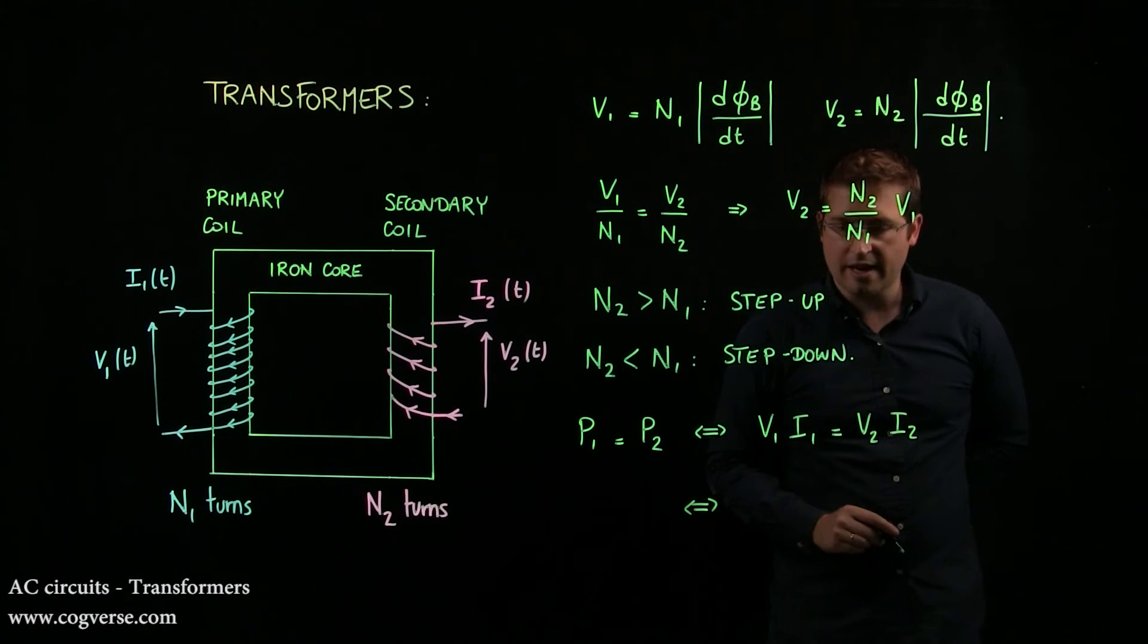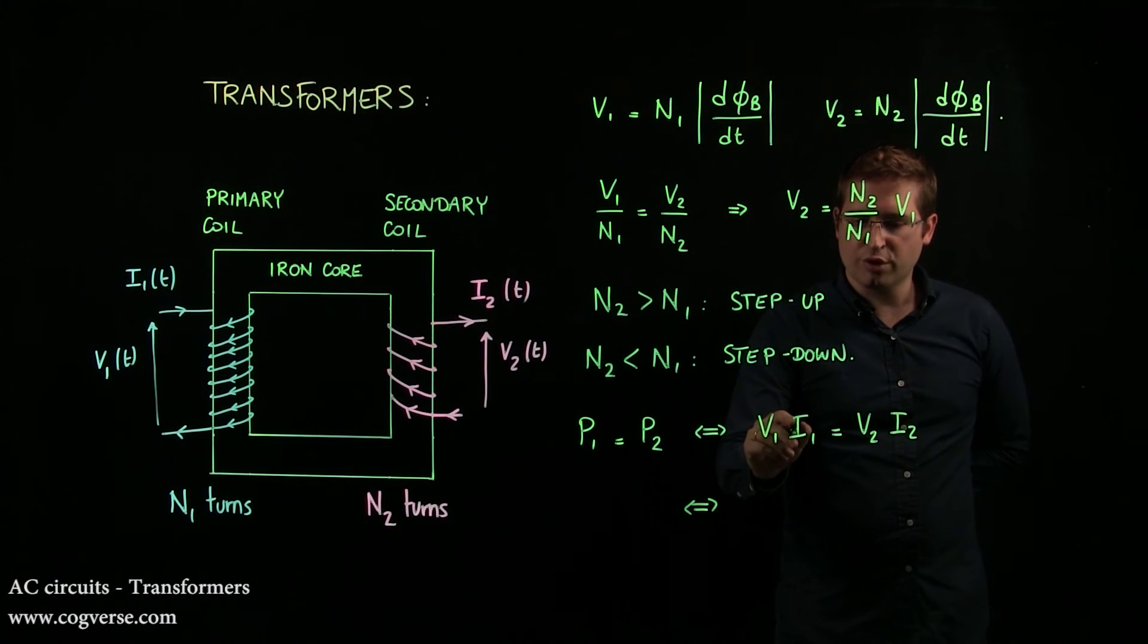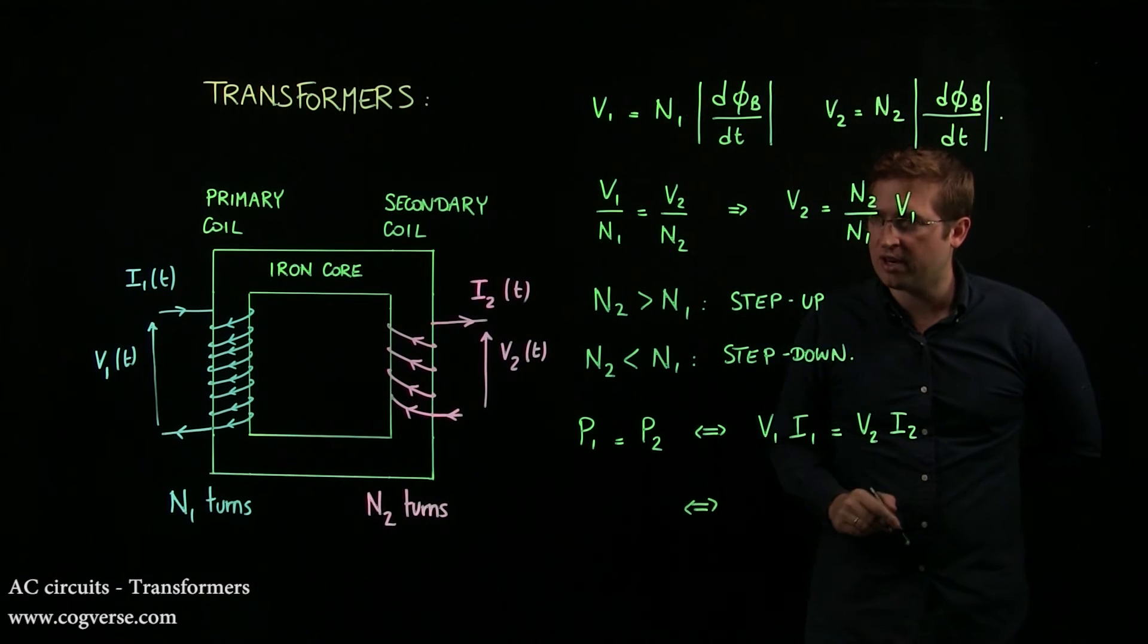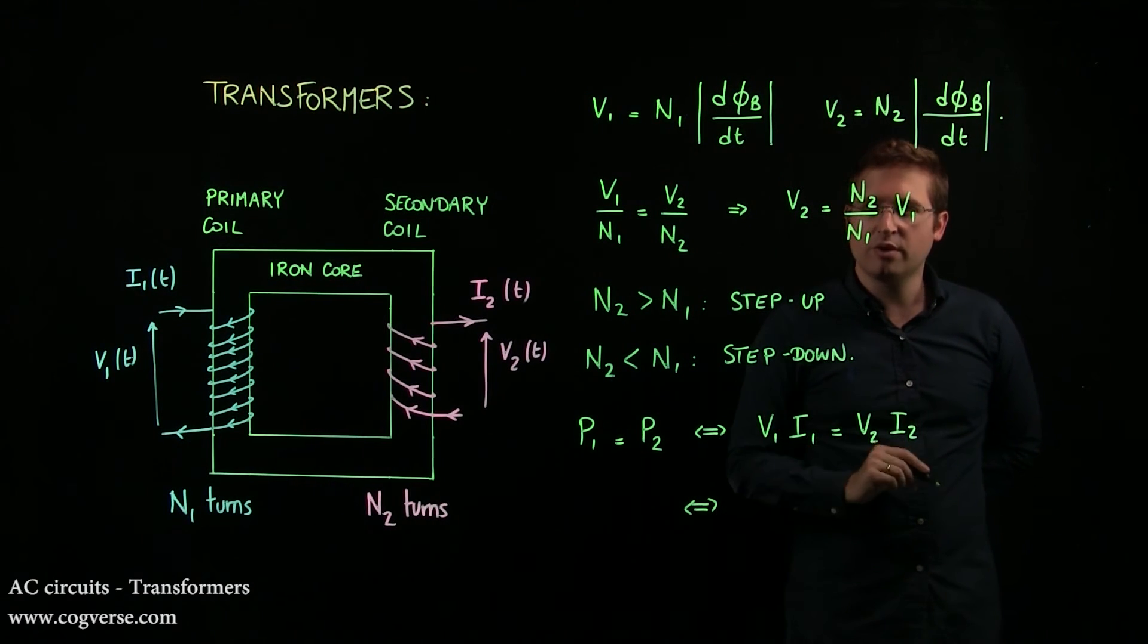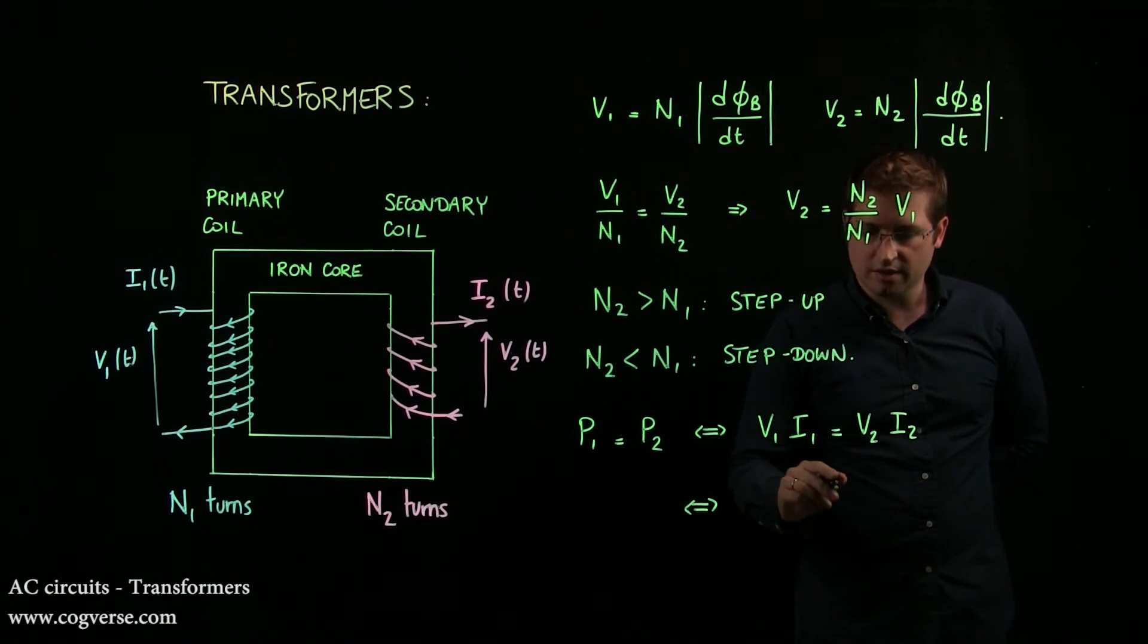In other words, you can relate I2 to I1 through the ratio N2 over N1 because we know that V2 over V1 is N2 over N1.